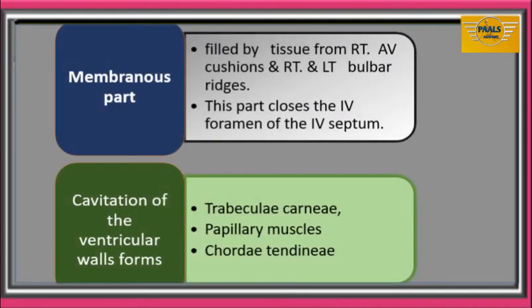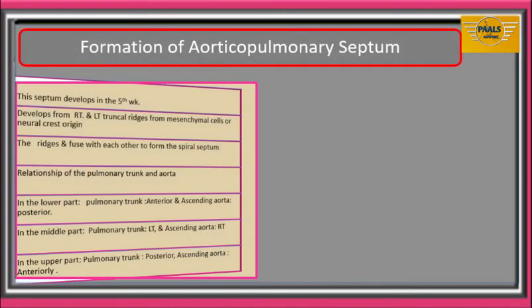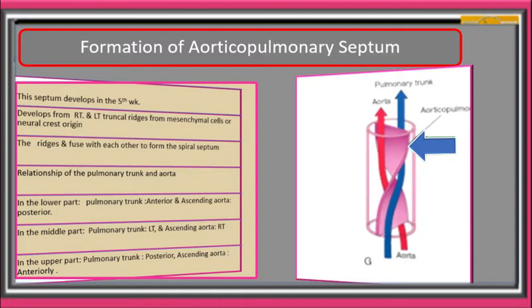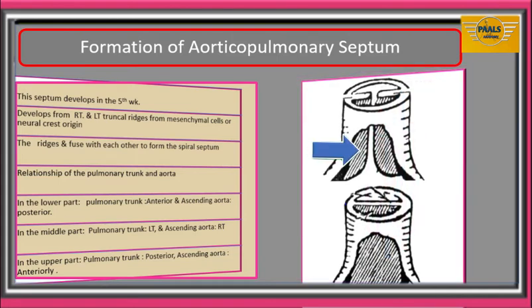Cavitation of the ventricular walls gives rise to the formation of the trabecular canal, papillary muscles, and the chordae tendineae. The aorticopulmonary septum develops during the fifth week of intrauterine life. It is a spiral septum that divides the truncus arteriosus into two vessels — the aorta and the pulmonary trunk. It develops from right and left truncal ridges due to proliferation of mesenchymal cells derived from neural crest cells that migrate into the walls of the truncus arteriosus near the conus. The truncal ridges grow and fuse to form the spiral septum close to the conical part of the ventricle.